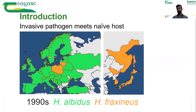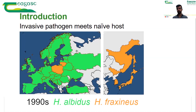Sometime in the 90s, somewhere in eastern Europe, this fungus was brought by accident from Asia into Europe and it meets a naive host. Their interaction is no longer symbiotic — instead of feeding on dead plant matter like ash leaves, it starts feeding on the living parts of the trees, causing infection and ash dieback.